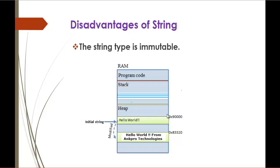Why on the heap? Because string is a reference type — whatever you store in a string will occupy memory on the heap, while the stack provides memory space for value types. Now, by changing the initial string 'Hello World' to 'Hello World from Angpro Technologies', this will create a new string object on the heap instead of modifying the initial string at the same memory address.